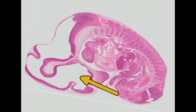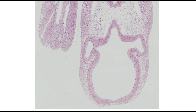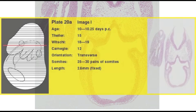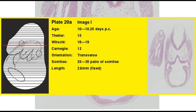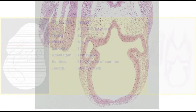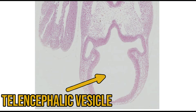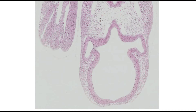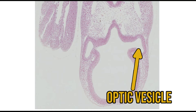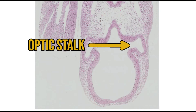So now we can get into the histology. This is a section through the front end of a developing mouse embryo at ten days gestation. Here is the neural tube — a part called the telencephalic vesicle that will form the brain. On either side there is an outpouching: this is the optic vesicle, connected to the telencephalic vesicle via the optic stalk. So far so simple.